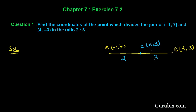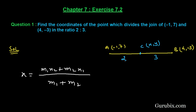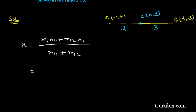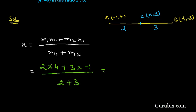Here is 2 and here is 3, and we have to find the coordinates — the values of X and Y. We shall apply the section formula. The section formula for the X coordinate is: X = (M1·X2 + M2·X1) / (M1 + M2). Here M1 is 2, M2 is 3. Substituting: X = (2×4 + 3×(−1)) / (2 + 3), which gives (8 − 3) over 5.